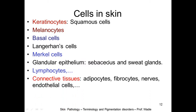In addition there are lymphocytes and other blood-derived cells from the circulation, as well as connective tissue cells: adipocytes, fibrocytes, nerves, and endothelial cells. We mention these cells because any of them can give rise to a tumor, whether benign or malignant.